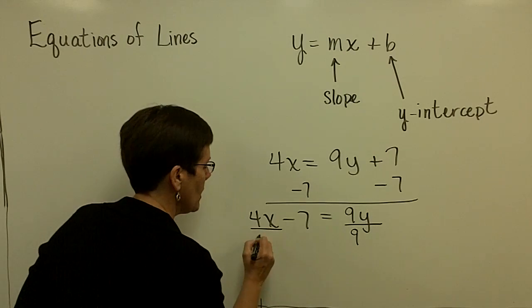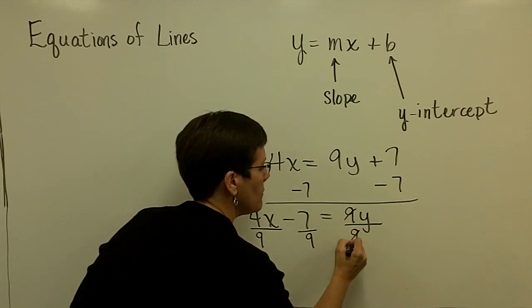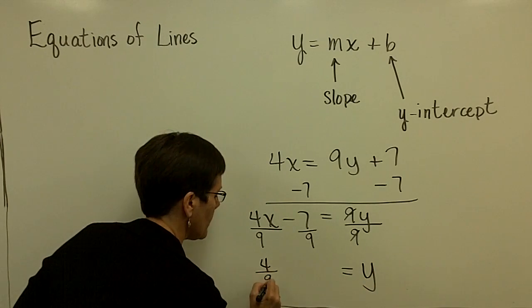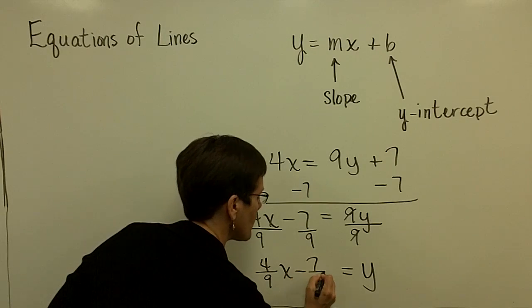the coefficient of y. So divide this by 9 and divide this by 9. Let's write this down one more time: y equals 4 ninths x minus 7 ninths.